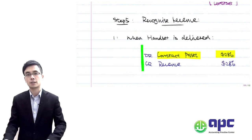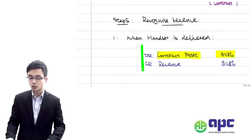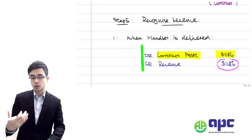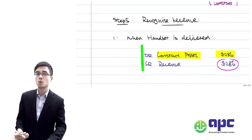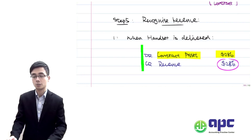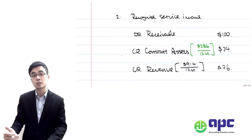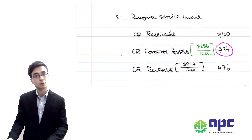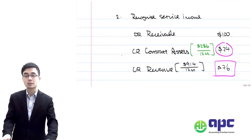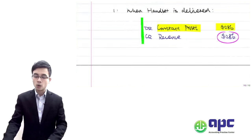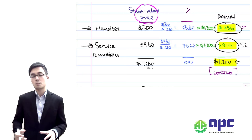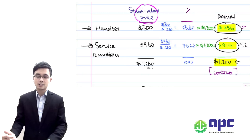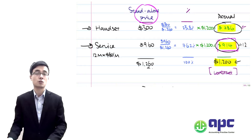Finally, step five: we recognised the revenue — first for the handset as we deliver it, debiting the contract asset because by having this contract we receive $20 more per month than normal customers. As each month passes, we reduce the contract asset by $24 and recognise sales revenue of $76, adjusted based on the standalone selling price proportions. That's the service income of $914 spread over the 12-month period.